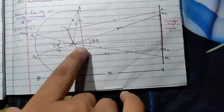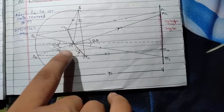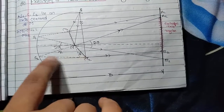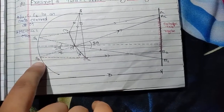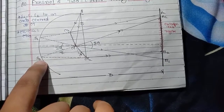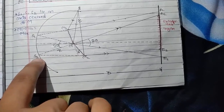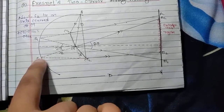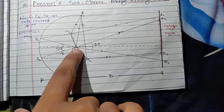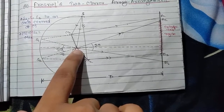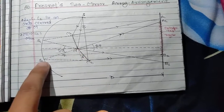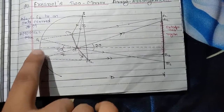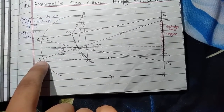When we retrace the path M2-B2, it appears to come from point S2. Here, both S1 and S2 act as sources of light which are coherent in nature.